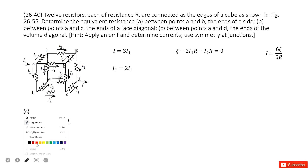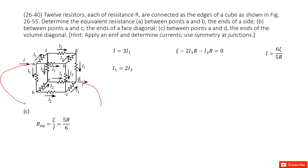For the third part, we find the equivalent resistance from position A to position D. By symmetry, at position A the current entering is I and the current leaving splits equally into three branches: I equals 3·I1. At position F, I1 equals 2·I2. Drawing a loop from the battery: epsilon minus I1·R minus I2·R minus I1·R equals zero. Solving these three equations gives I equals 6·epsilon divided by 5R, and the equivalent resistance is 5R over 6. Thank you.